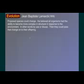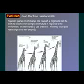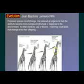Lamarck proposed that species could change. He believed that all organisms had the ability to become more complex in structure in response to their environment — in other words, by use or disuse — and then could pass that change on to their offspring. For example, Lamarck proposed that some short-necked ancestor to giraffes, in response to needing to reach higher leaves, could stretch their necks repeatedly over time, and then pass that change on to their offspring.